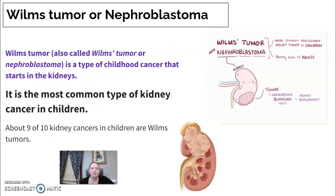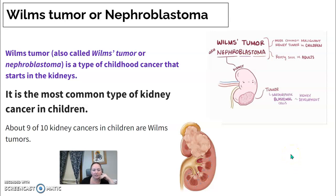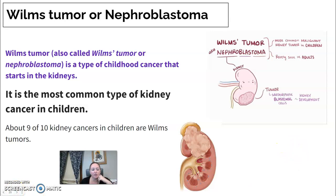Wilms tumor, also called nephroblastoma, is a type of childhood cancer that starts in the kidneys and is the most common type of kidney cancer in children. Imaging can demonstrate where the tumor forms, making this an important terminology in pediatric renal pathology. That concludes this section — we'll be back for the next part.